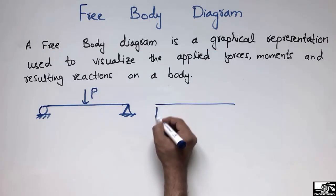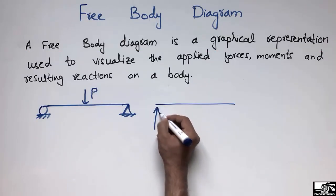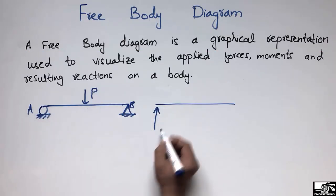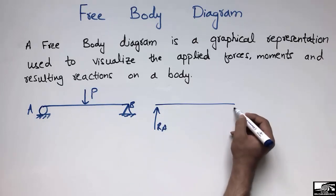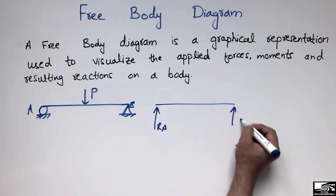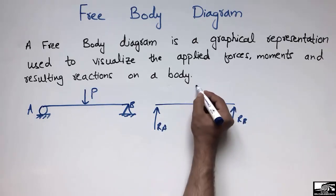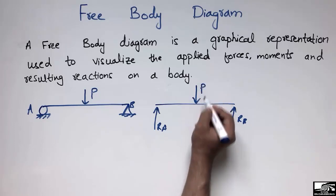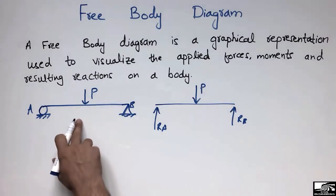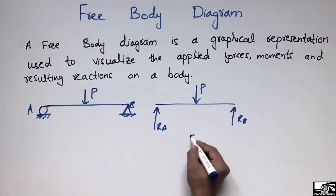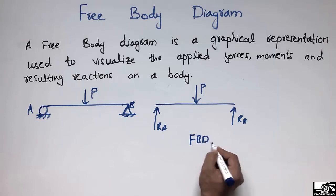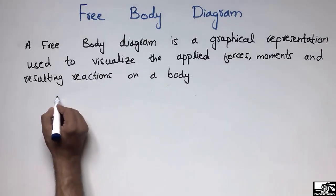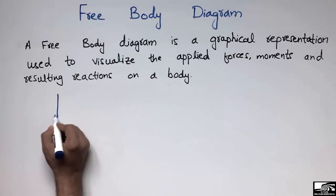The two reactions will be provided — if I call this point A and this point B, then this reaction will be RA and this reaction will be RB. Similarly, the load is acting at the midpoint of the beam. So this is the free body diagram of this simply supported beam.